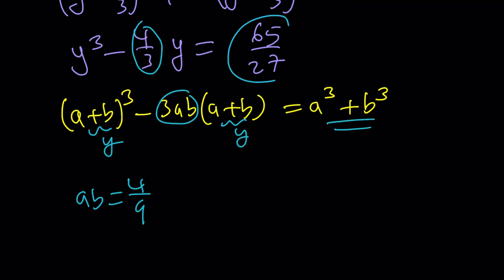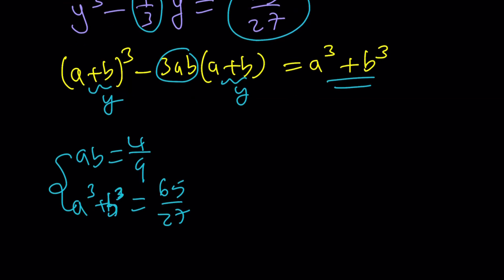And then from this constant, we get a cubed plus b cubed is equal to 65 over 27. Things are going to get a little messy, that's why I'll just leave it to you to finish up.